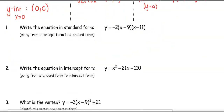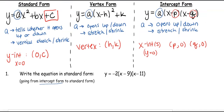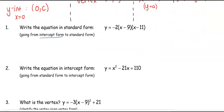For our first example, we want to write the equation in standard form. Looking at the equation, I can see the two parentheses, which means I'm starting in intercept form. To go from intercept form to standard form, all you're going to do is multiply — we reviewed this in our algebra review.